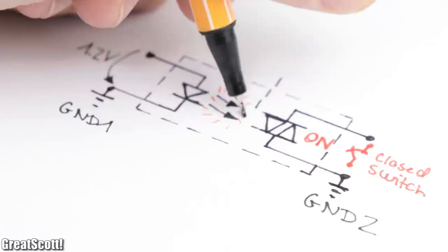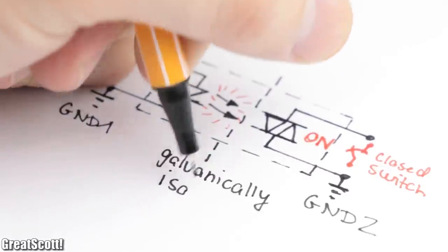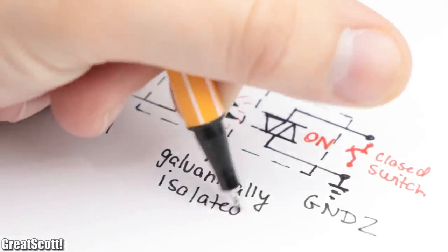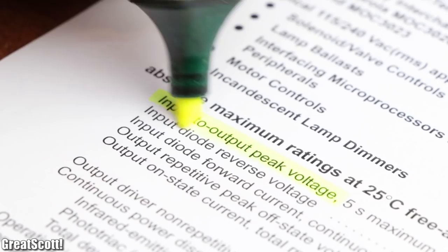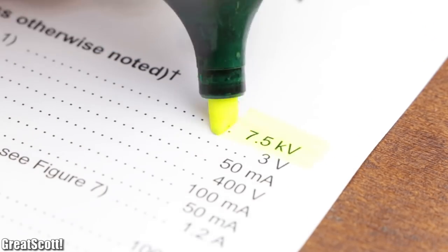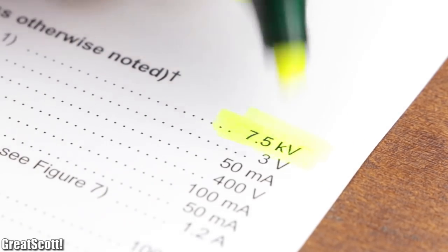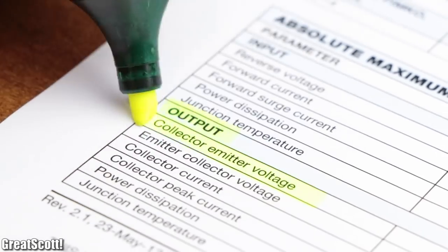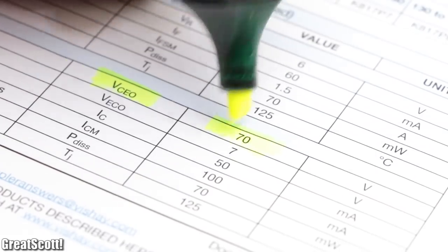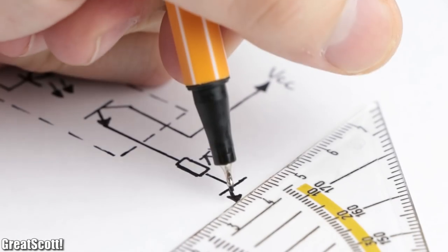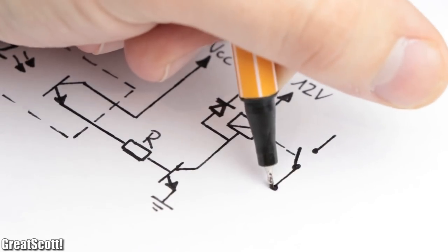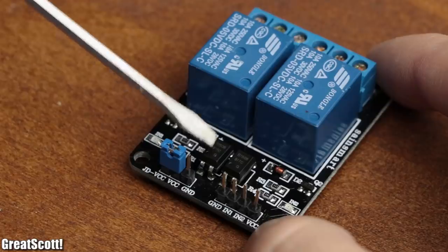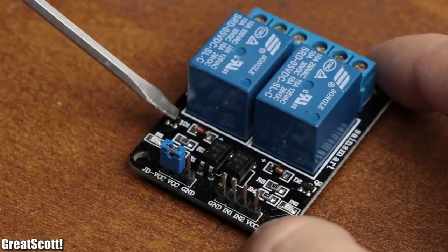And since the input and output side of the optocoupler are just like the relay galvanically isolated, there's no harm for our control microcontroller signal, since the isolation voltage goes up to 7500 volts in this case. Of course, a transistor based optocoupler cannot switch that high of a voltage, but it can for example turn on a second transistor, which then can turn on the coil of a relay, which brings us back to the example we started with.